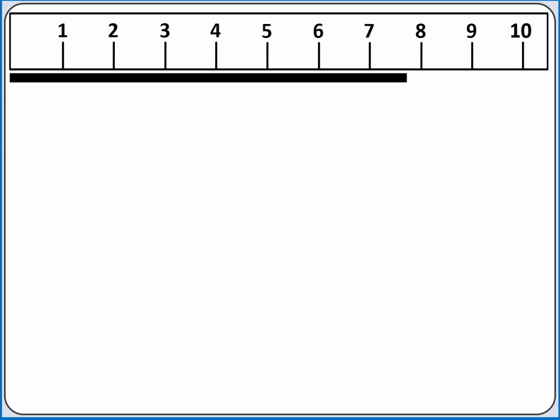If we use this ruler to measure the black line, we know the line is somewhere between 7 and 8 units long. We might say the line is 7.7 units long, or maybe 7.8 units long. The ones digit is certain, but the tenths digit is estimated. The way we report our number communicates something about the measurement we made.